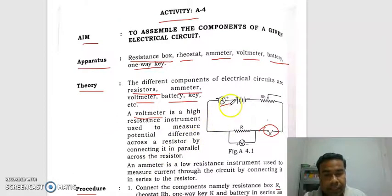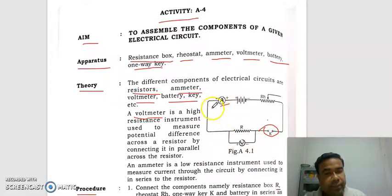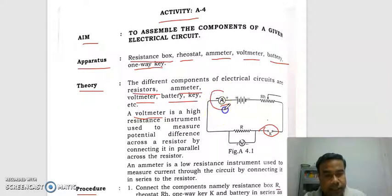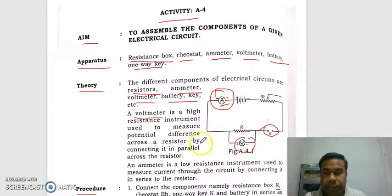Note: the diagram in the textbook has a mistake — the emitter is shown connected in parallel and the volumeter connected in series, which is wrong. So if you follow the textbook, keep in mind: the emitter is connected in series and the volumeter is connected in parallel. Thank you.